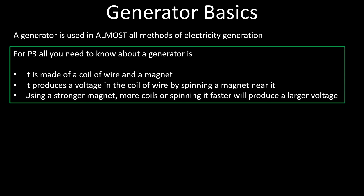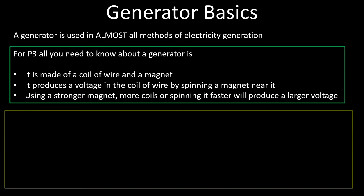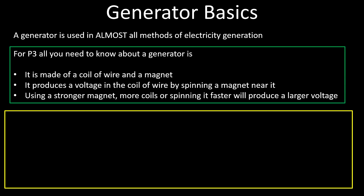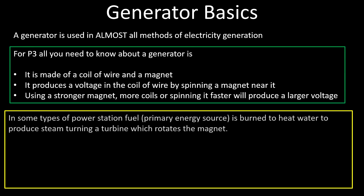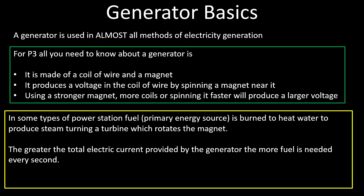If you want a larger voltage you can use a stronger magnet, more coils of wire, or spin the generator faster, and that will produce a larger voltage. You also need to know about the link between the amount of current drawn from a generator and the amount of fuel being used, if it is indeed a generator that's being powered by a fuel.